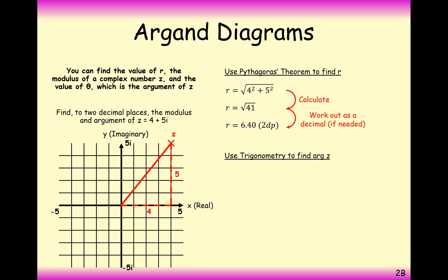The next part is to find the argument of 4 plus 5i, which is slightly more difficult. The argument is the angle measured from the positive real axis — always this axis — round to the line of your complex number. So all we need to do here is work out this angle theta inside the triangle.